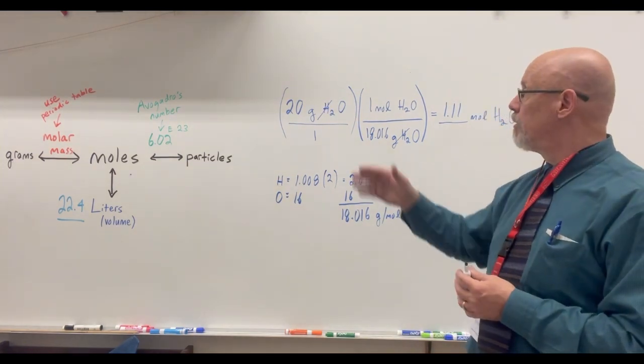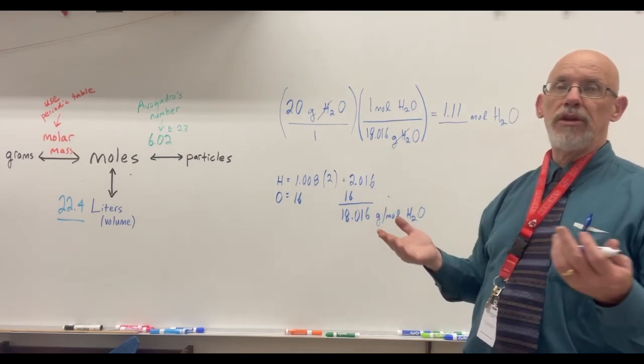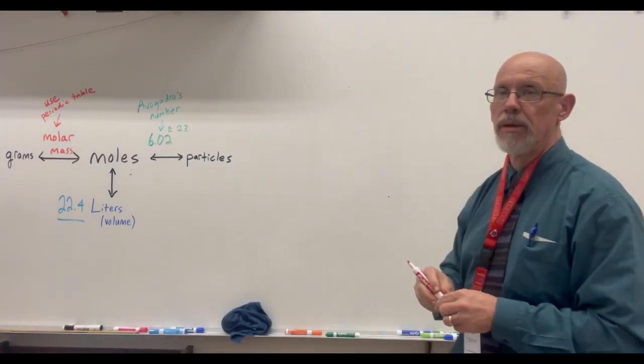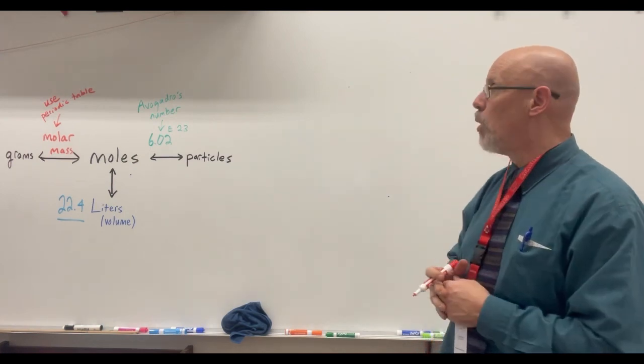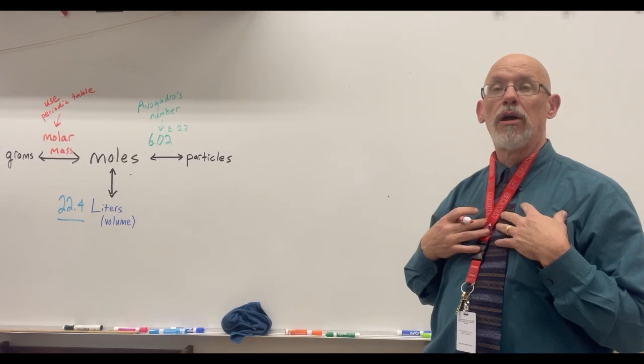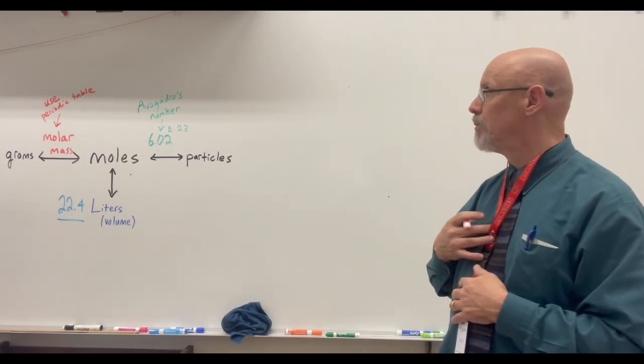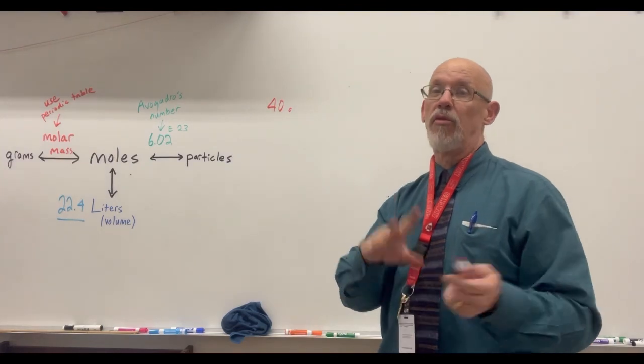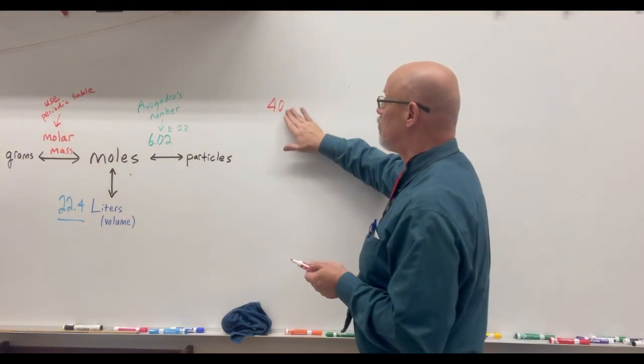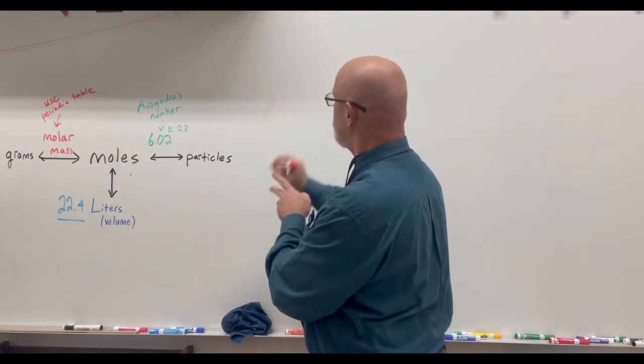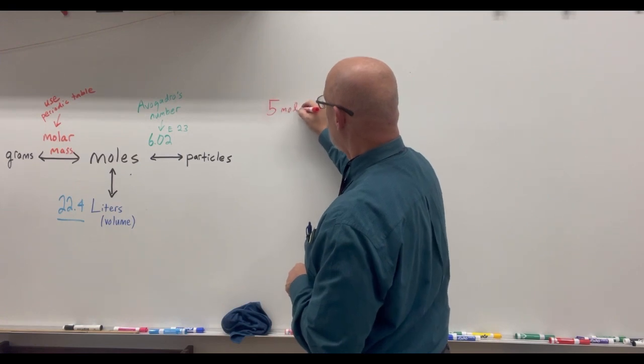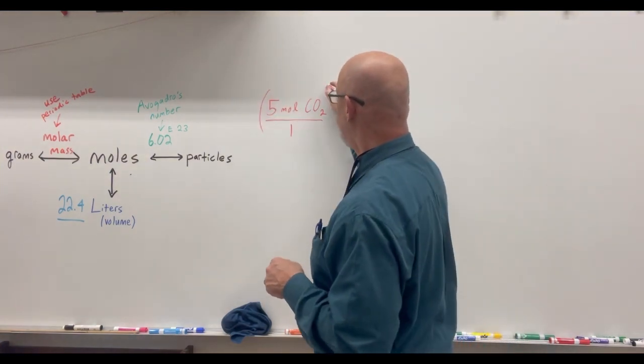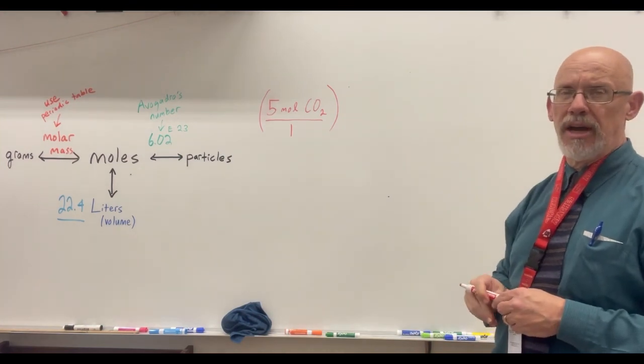So let's suppose instead of being given grams we're given moles. What would we do then? Well let's find out. So let's say instead of being given grams we're given moles and we'll use a different substance this time. We're going to use carbon dioxide. Carbon dioxide's formula is CO2. Let's say we have 40 grams of, oh sorry that's a mistake because I didn't want to do grams. I've already done grams with the water. Grams to moles. I need to do moles to grams. So let's make this even simpler. Let's say that we have five moles of carbon dioxide. And so I write that as a fraction over one. Number five, the unit is the mole. The substance is carbon dioxide CO2.